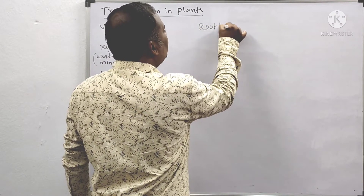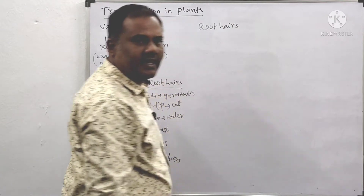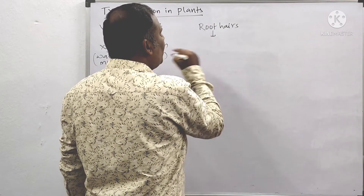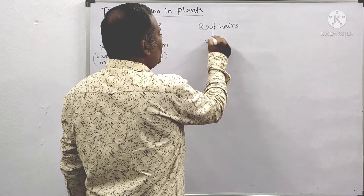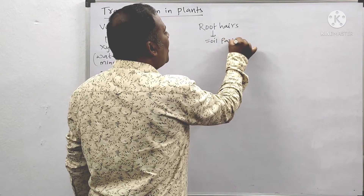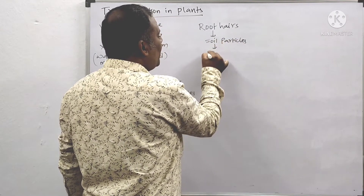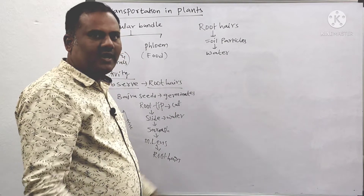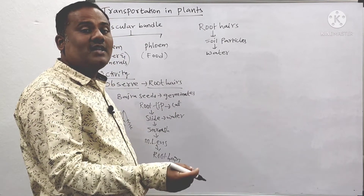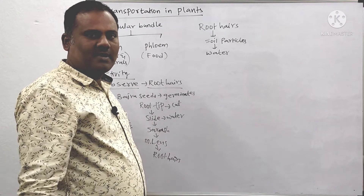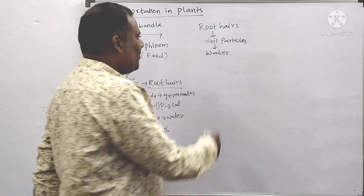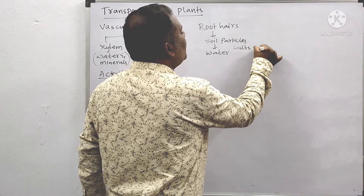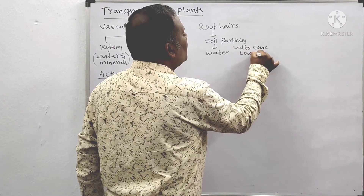These root hairs are attaching to and penetrating into the humus soil particles. When you water the soil, or when rainfall occurs, the salts present in the soil will dissolve. At that time, the salt concentration in the soil becomes lower.